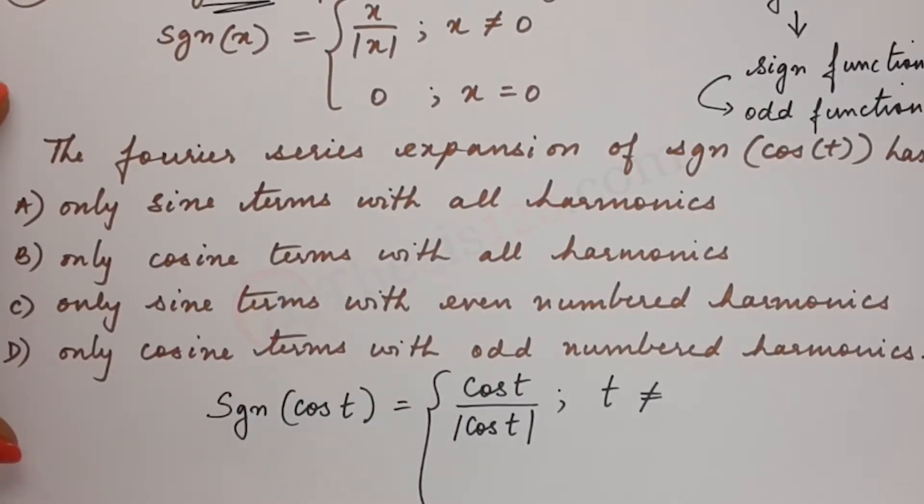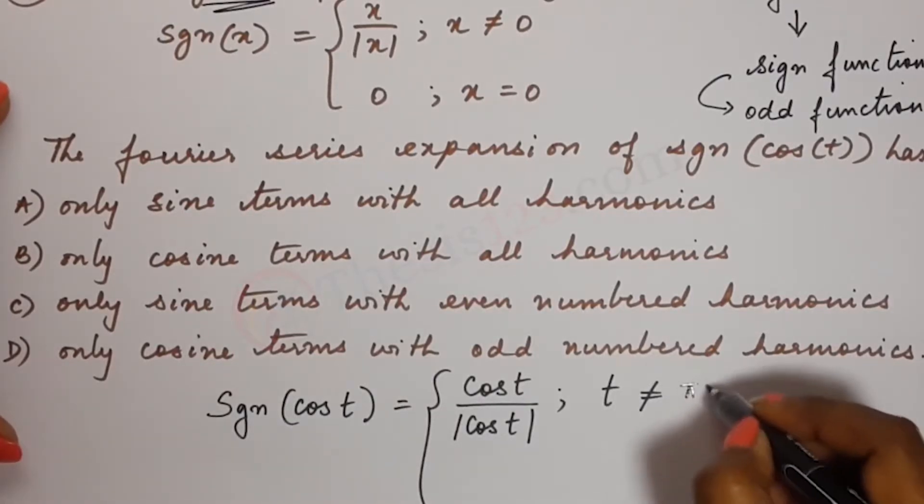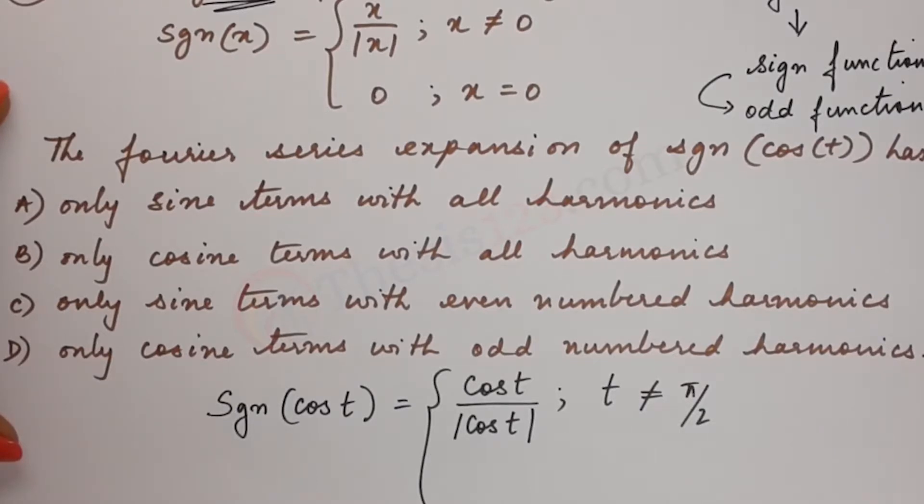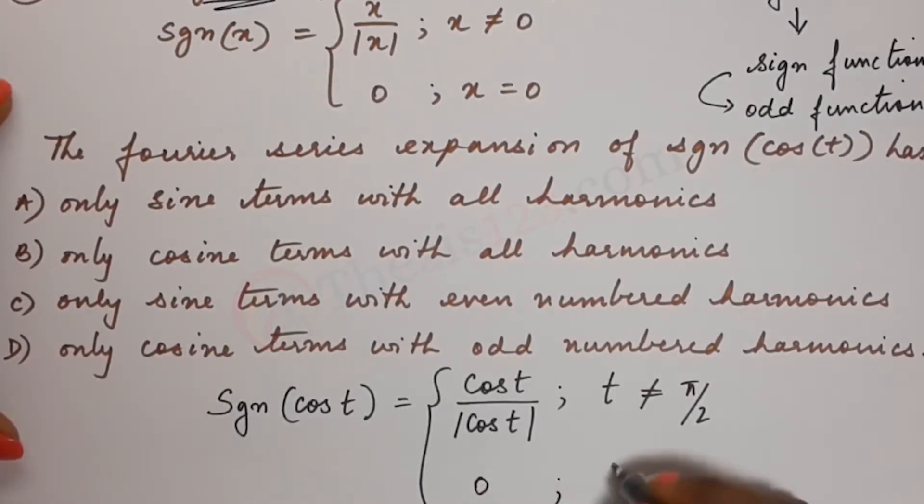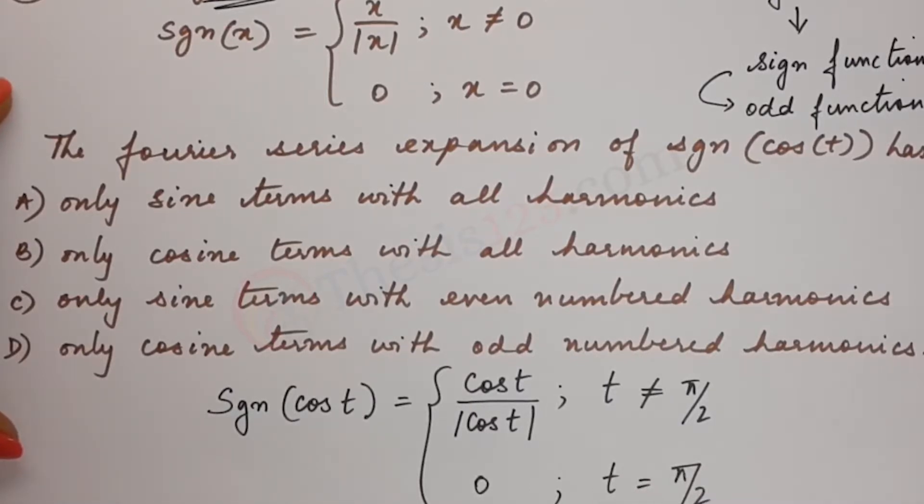It's at pi by 2, 90 degrees. So this is pi by 2. And signum of cos t would be 0 at t equals pi by 2.